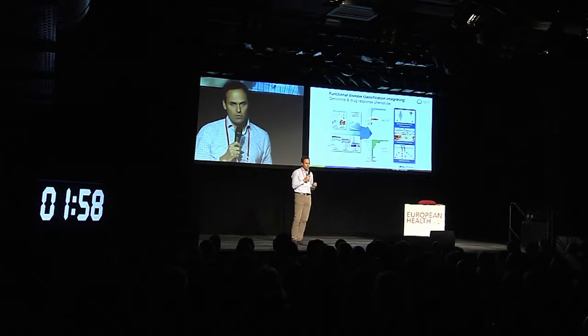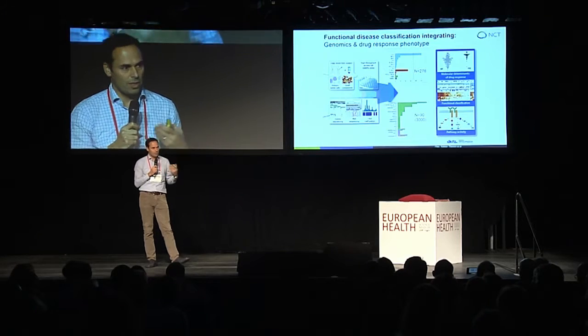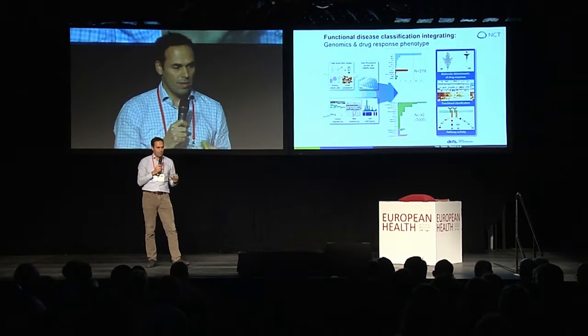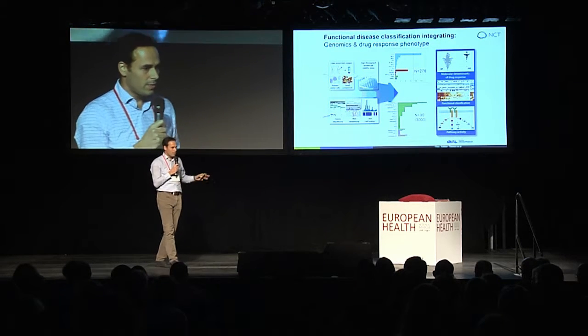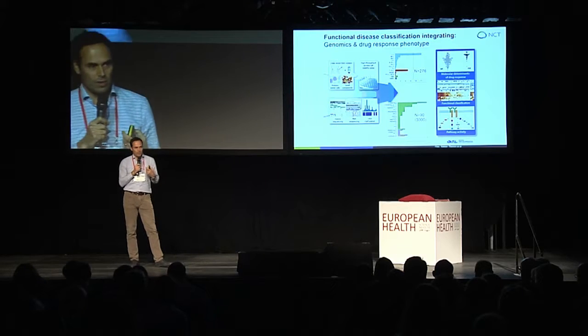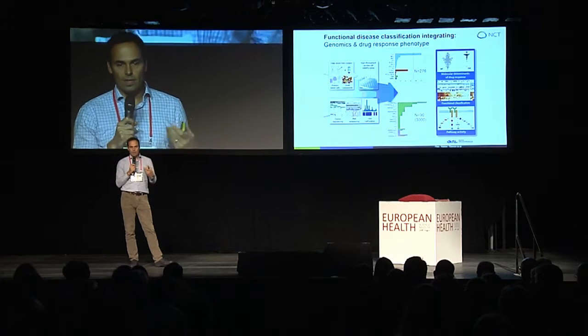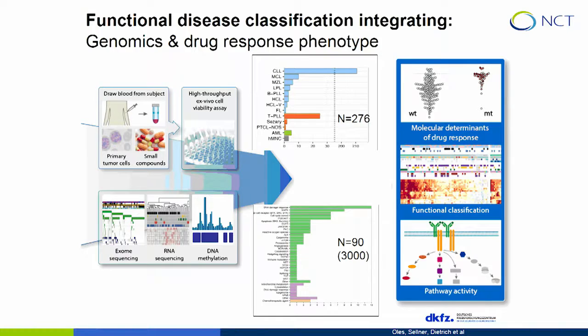Now we match this information — these functional phenotypes that we measure — with all the omics pipelines that we have. We can match this to cancer genomes. We can look at the methylome. We can look at the impact of gene expression. When we started, we were quite keen to identify new drugs, but with all the information we have on the mechanism of action of drugs, it's really becoming quite apparent that it's the individual patient that is going to deliver most of the novel information.